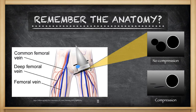The next spot you're going to find is the sapheno-femoral junction. This is an area of turbulence and can be quite concerning for the development of a DVT, so it's really important to not only visualize this portion but provide some compression on it as well. On the top image you see the artery, the deep femoral vein, and the sapheno-femoral junction, and then you see the compression on the bottom.